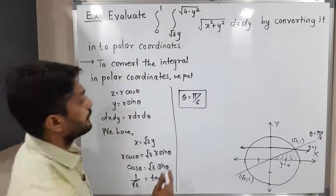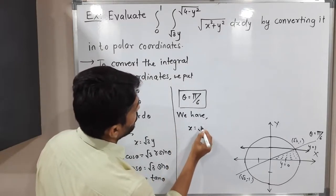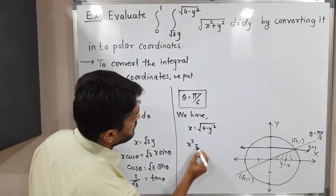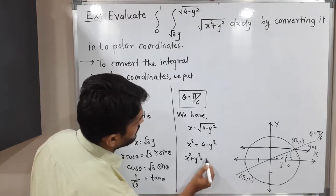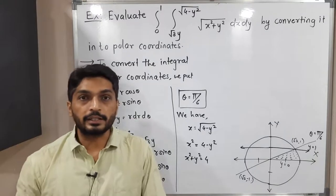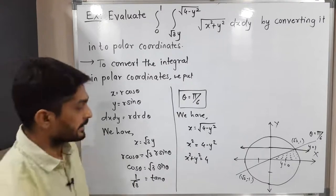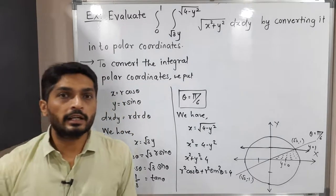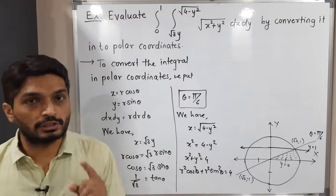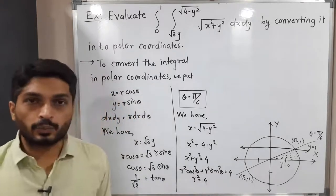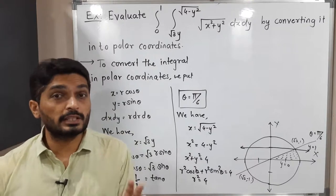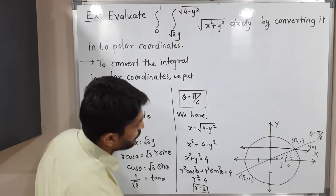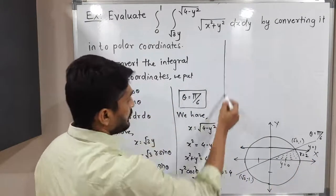For the second curve, x² + y² = 4, substituting x = r cosθ and y = r sinθ gives r²cos²θ + r²sin²θ = 4. Taking r² common: r²(cos²θ + sin²θ) = 4, so r² = 4, meaning r = ±2. Since r is a radius, it cannot be negative, so r = 2. The polar equation of the circle is r = 2.